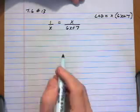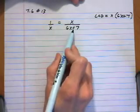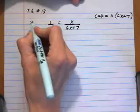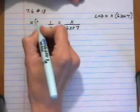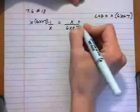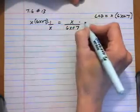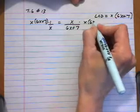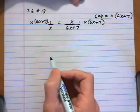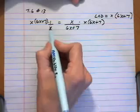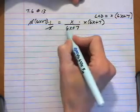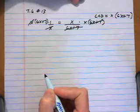Now we're going to multiply both sides of the equation by the LCD, and that way it's going to cancel out the two denominators completely. So it multiplies on the left and on the right. Then we do our canceling — x and x are cancelled on the left, and on the right side 6x plus 7 goes.